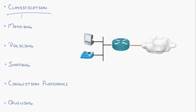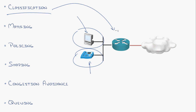At the core of quality of service is classification — the ability to identify different traffic types so that you can properly prioritize one over the other. Traditionally, voice over IP is much more important than somebody surfing the web. Classification allows you to use a tool like an access control list or network-based application recognition to catch data coming into a router and say, that's VoIP, that's YouTube surfing — and then prioritize one above the other.